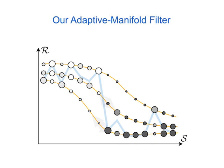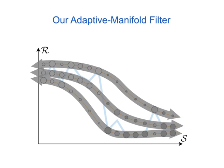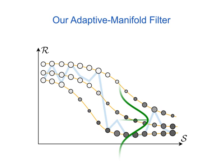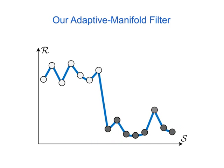The second step blurs over each manifold the projected colors from the previous step. In the final step, each pixel gathers one filtered value from each manifold and interpolates them using normalized convolution. Performing this operation for every pixel produces the desired filtered colors.